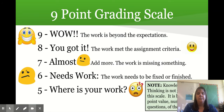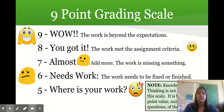I grade on a nine point scale. A nine means the work is beyond the expectations I gave you. An eight means you got it — you did exactly what I asked, you met the criteria, no more, no less. A seven is almost — this means add more, the work is missing something, tweak or change one or two things and then you've got it.